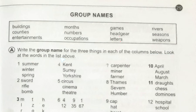Let's start. Number one: summer, winter, spring. What can we name them? Looking through the list — buildings, entertainments, months, numbers, occupations, games, headgear, letters, rivers — seasons! We've got it. These are the names of seasons, so we write 'seasons' here.